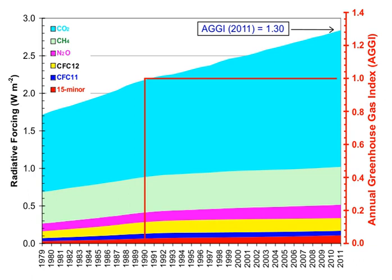It is not possible to state that a certain gas causes an exact percentage of the greenhouse effect. This is because some of the gases absorb and emit radiation at the same frequencies as others, so the total greenhouse effect is not simply the sum of the influence of each gas. The higher ends of the ranges quoted are for each gas alone; the lower ends account for overlaps with the other gases.